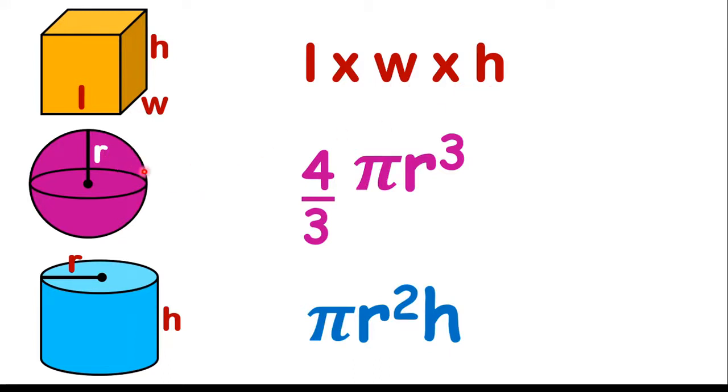To measure the volume of a sphere, it is 4 over 3 times pi r cubed. And r is the radius. To measure the volume of a cylindrical object, then it will be pi r squared times h. And h is the height of that cylinder. And r is the radius of that cylinder. All right, so just to note those for your information, if you do need to use them.